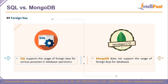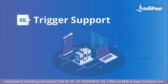The fourth point is foreign keys. SQL uses keys to map each table to another — or a column to another column in another table. It supports primary keys, candidate keys, and foreign keys for various database operations. MongoDB, however, does not support the use of foreign keys when storing data in databases.